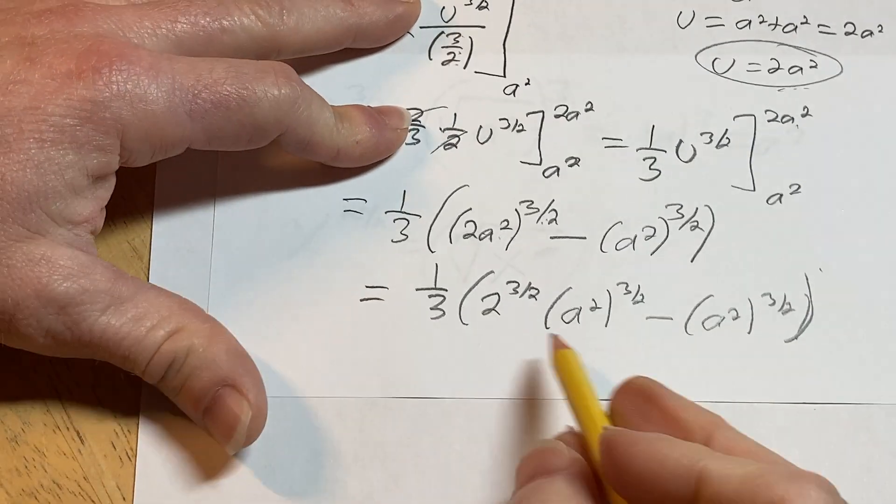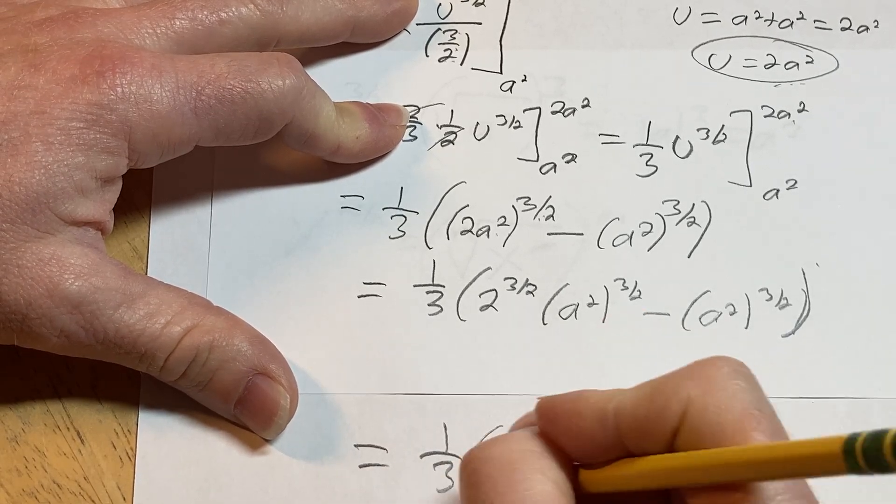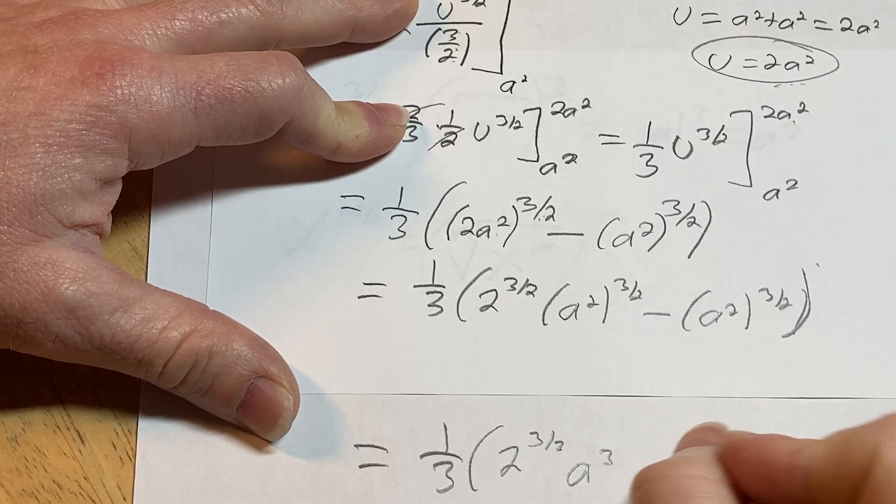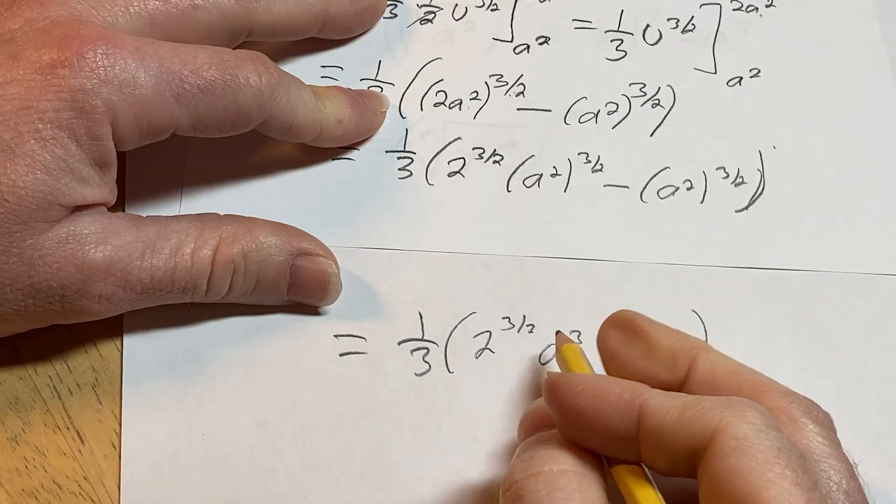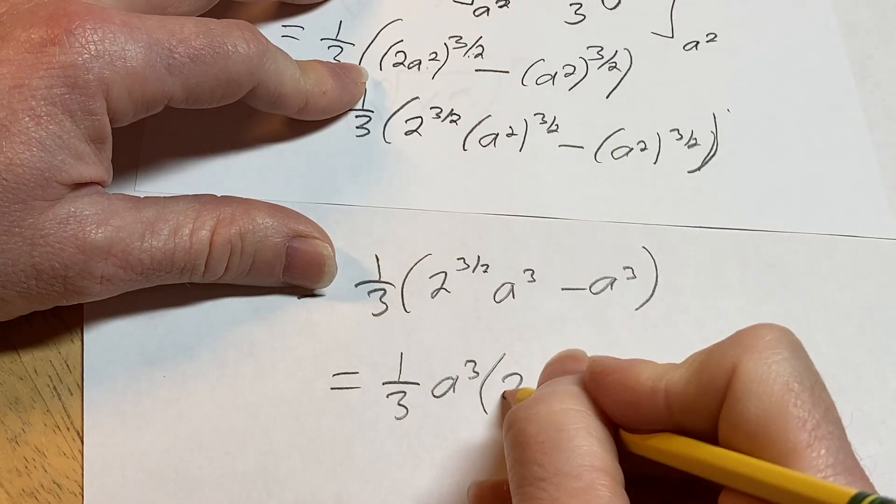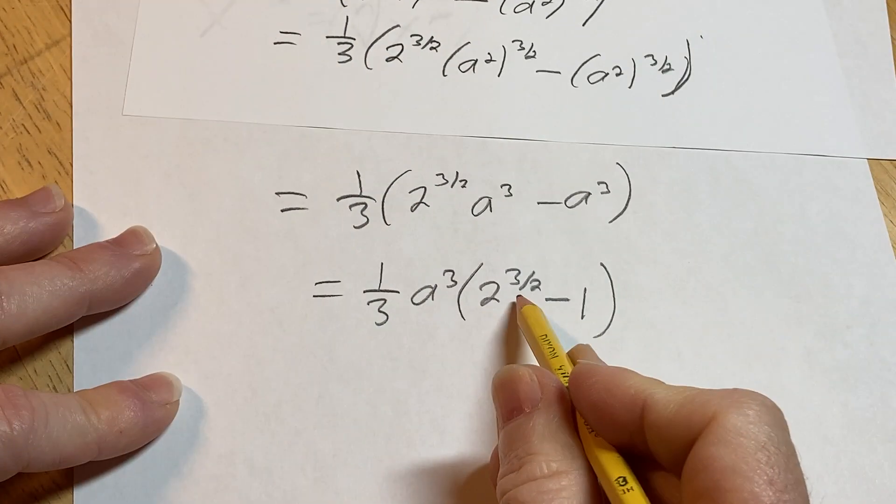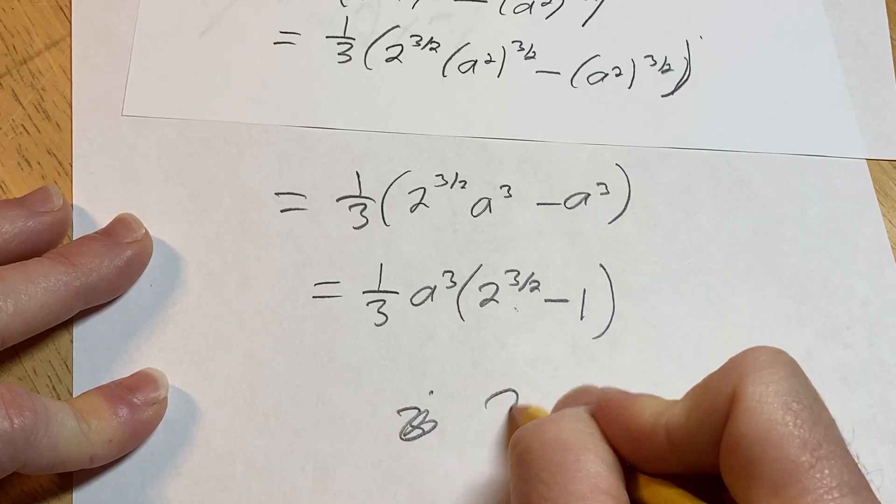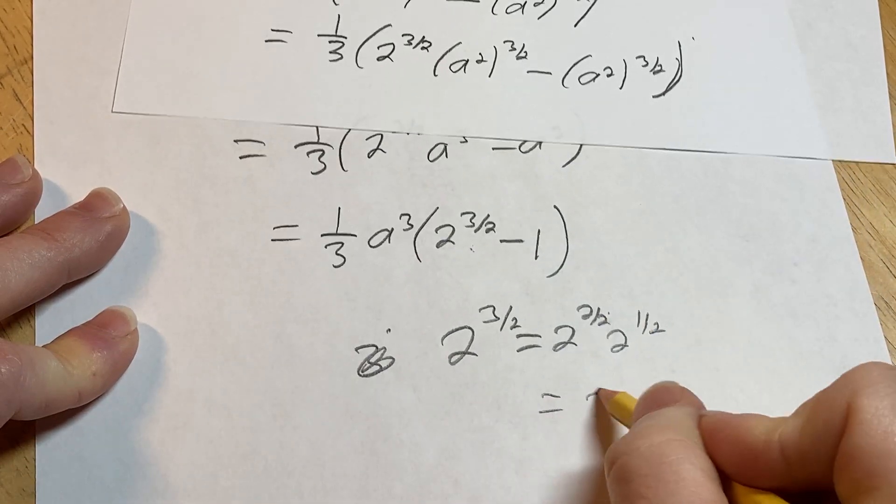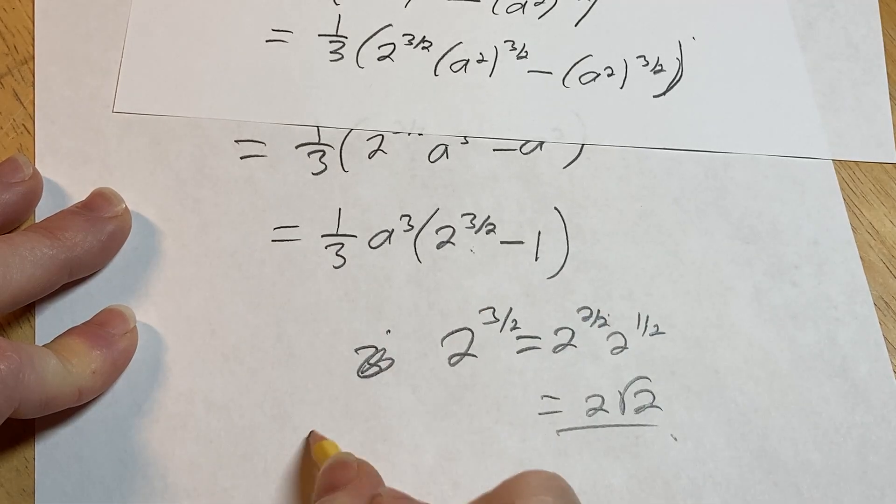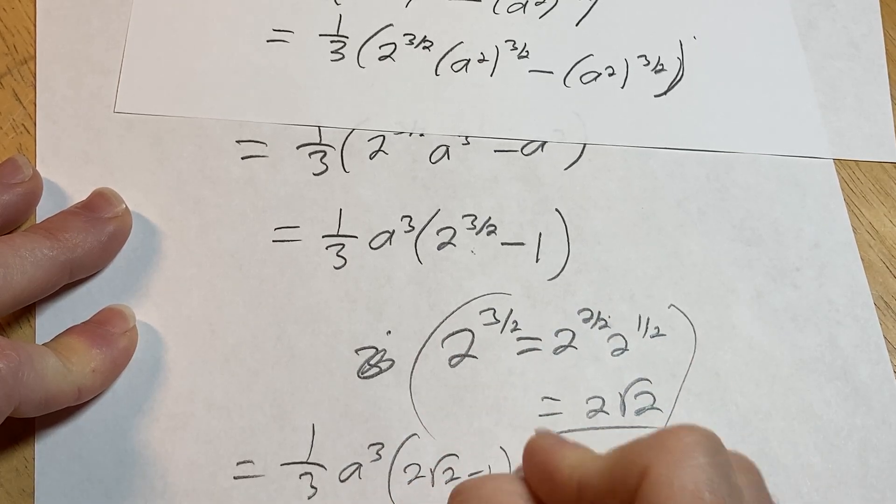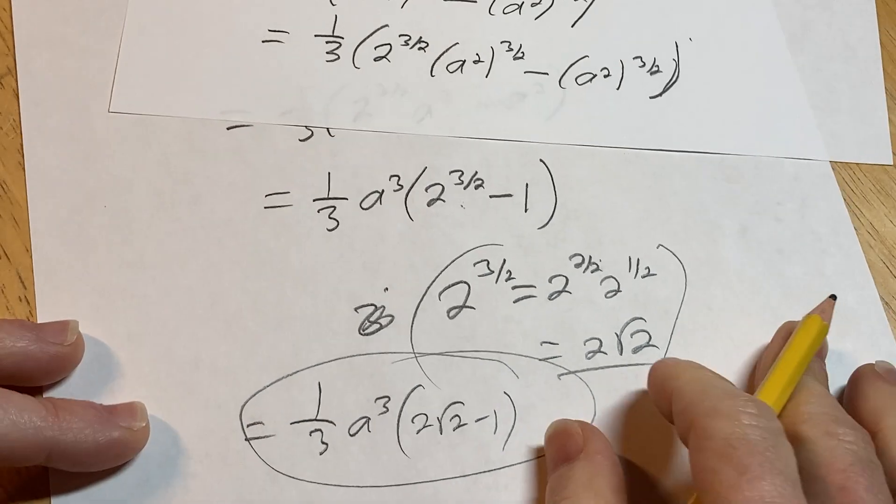So anyways, this is just going to be 1 third, 2 to the 3 halves. And we say it's going to be a cubed minus a cubed. So I guess you can pull out the a cubed. So it would be like 1 third a cubed, 2 to the 3 halves minus 1. And you can play with 2 to the 3 halves. You can write this as 2 to the 2 halves, 2 to the 1 half, which is just 2 square root of 2, if you like. So you can write this as 1 third a cubed, 2 root 2 minus 1. So all kinds of ways you can write the answer. That's one way to write it. It's a little bit nicer.